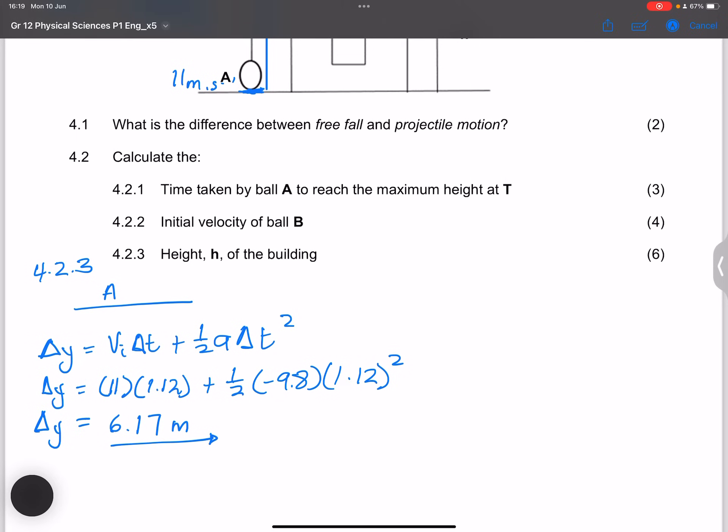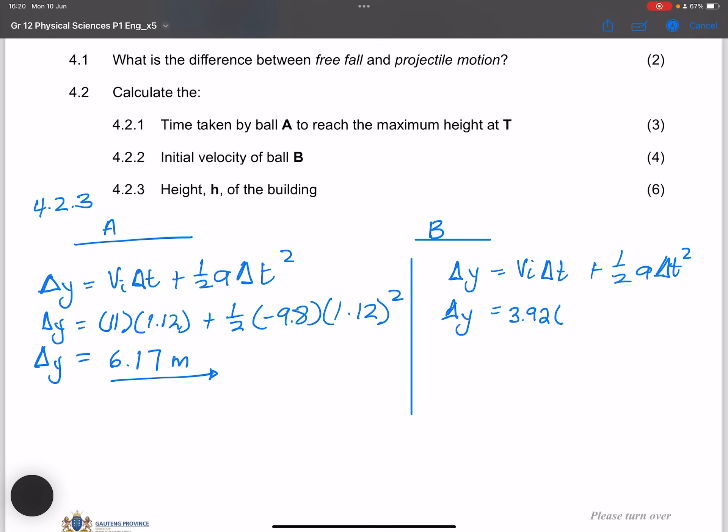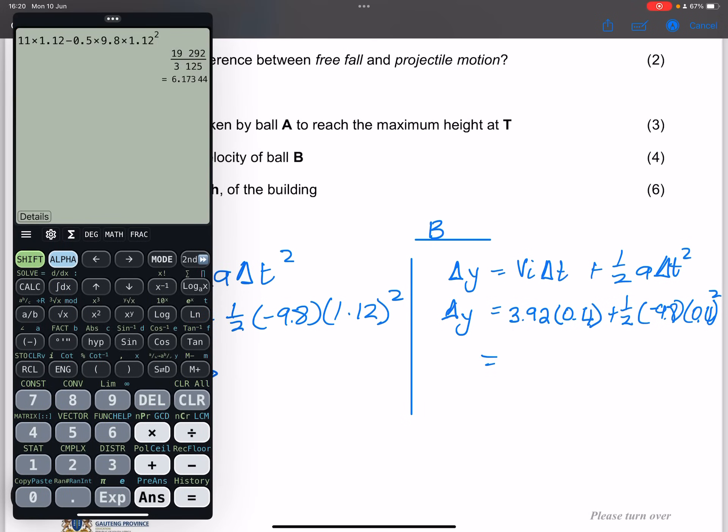But now we find the height for ball B. We're going to use exactly the same equation. So I'm going to say that's delta Y VI delta T plus 1 over 2 A delta T squared. So the displacement there would be, if you remember for ball B we started at 3.92 but the time of flight for ball B was 0.4, that's negative 9.8 times 0.4 squared. So now again I'm going to do the same thing. So that's 3.92 times 0.4.